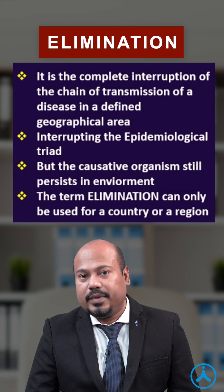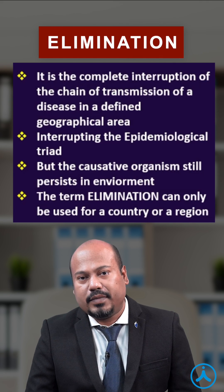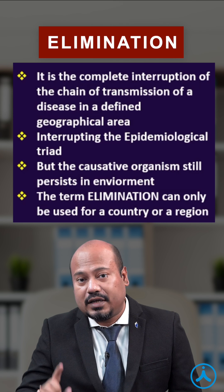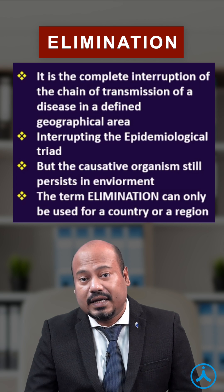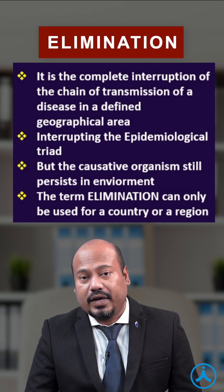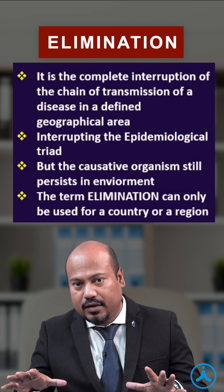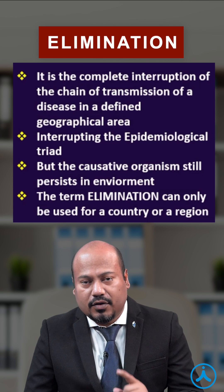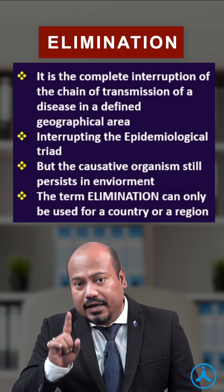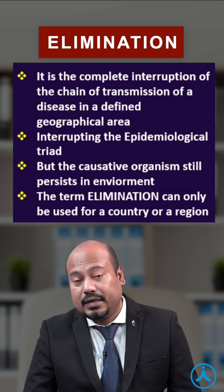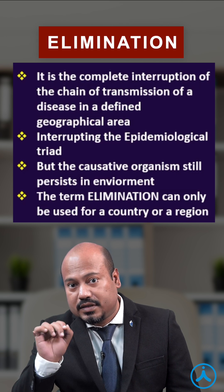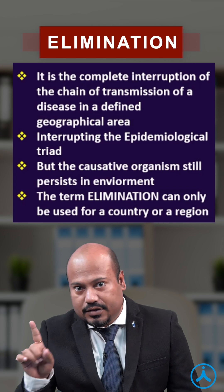Now what is disease elimination? Elimination means completely interrupting the chain of transmission of disease in a particular geographical area. We are interrupting the epidemiological triad of the agent, host, and environment. But remember, we are only interrupting the chain of transmission completely — the pathogen, the causative organism, is still persisting. Okay, it's not eradication.